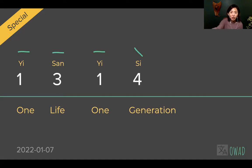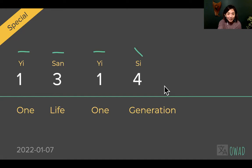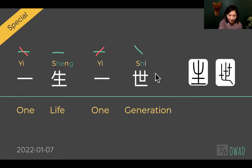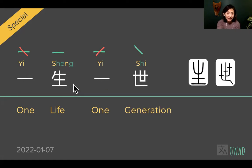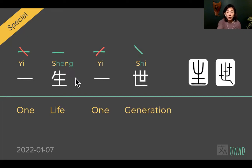Pronounced as YI SHENG YI SHI. So SAN — S-A-N in its pronunciation — we changed the vowel a little bit and added the nasal sound to make it deeper, going backwards. So it becomes SHENG instead of SAN — SHENG — but close enough, right?